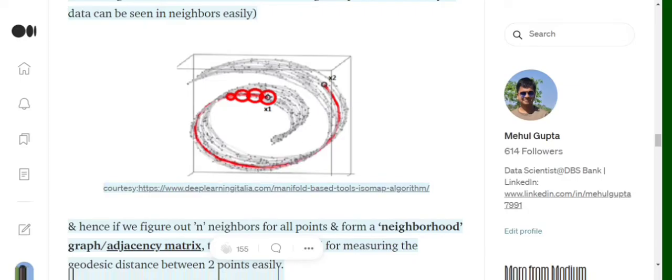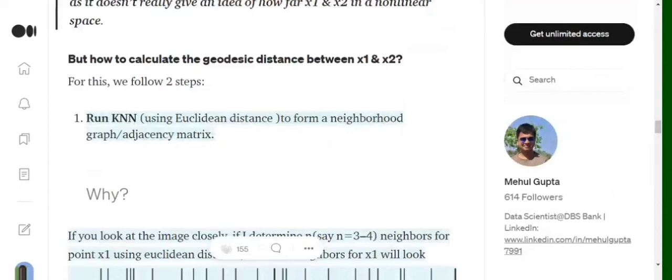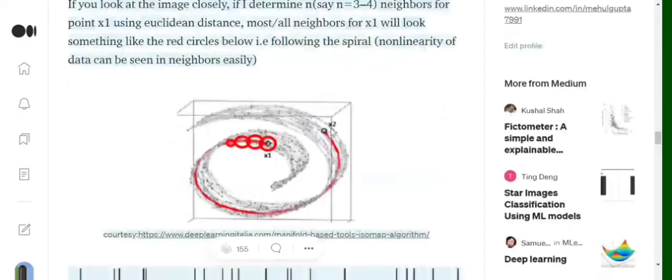Let's run through our algorithm, Isomaps. The first step involves calculating the geodesic distance. How is it calculated? There is no direct formula for it. Eventually what we will be doing is breaking this calculation of geodesic distance into two parts. First one is to run a KNN over the entire dataset with n pretty small, like around five or six.